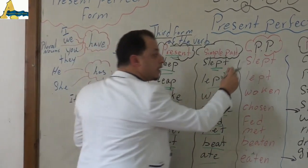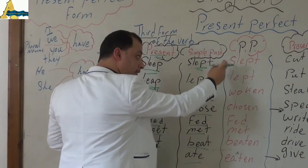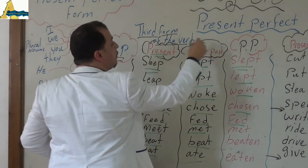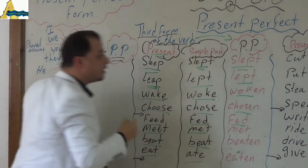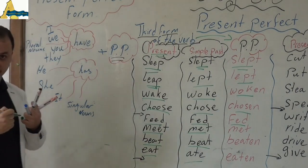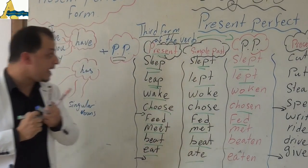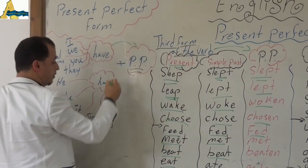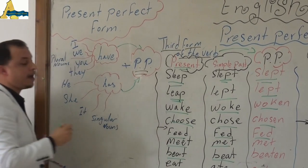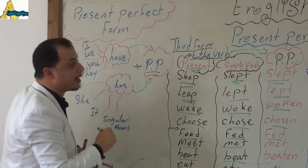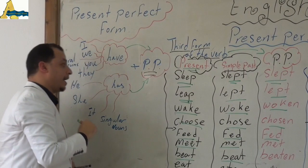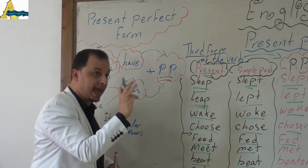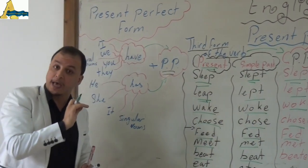Mr. Muhammad Gamal has drawn something here in red — these are the third form of the verb, the past participle. How could we use them? We are going to use them next to 'have' and 'has', directly after them. So we know now that the present perfect is 'have' or 'has' plus the past participle.